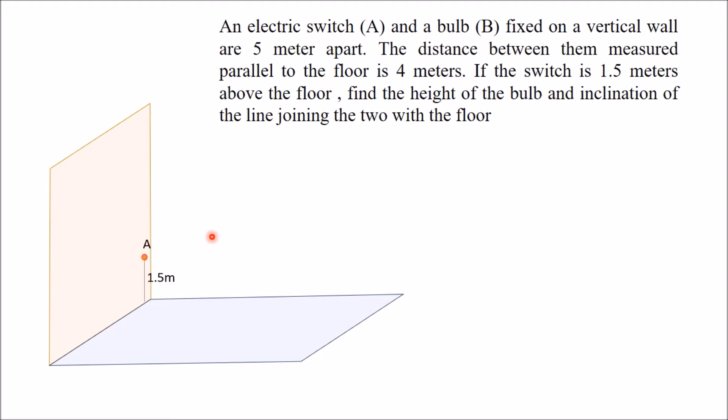There is a switch A which is 1.5 meters from the floor and a bulb B which is 5 meters away from A. The distance measured between A and B parallel to the floor is 4 meters. You have to determine the distance of B from the floor, that means this height you need to calculate, and similarly the angle this line is making with horizontal.